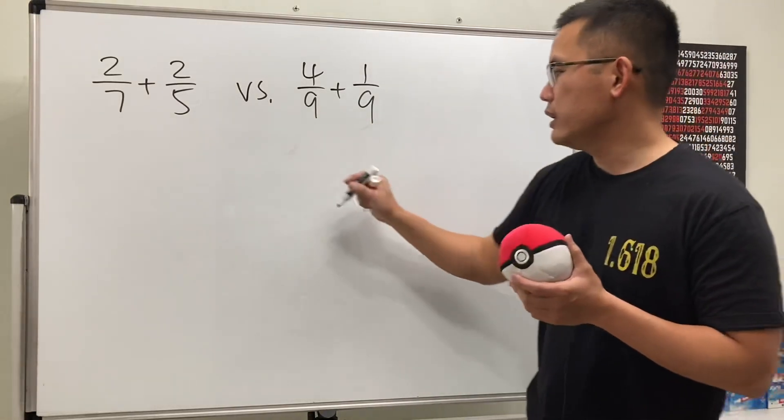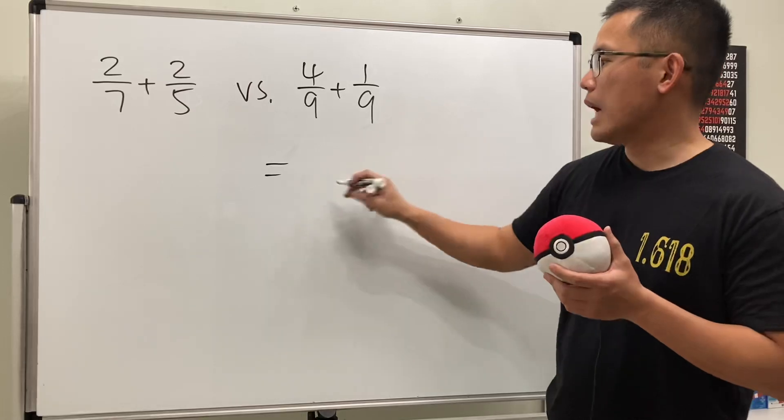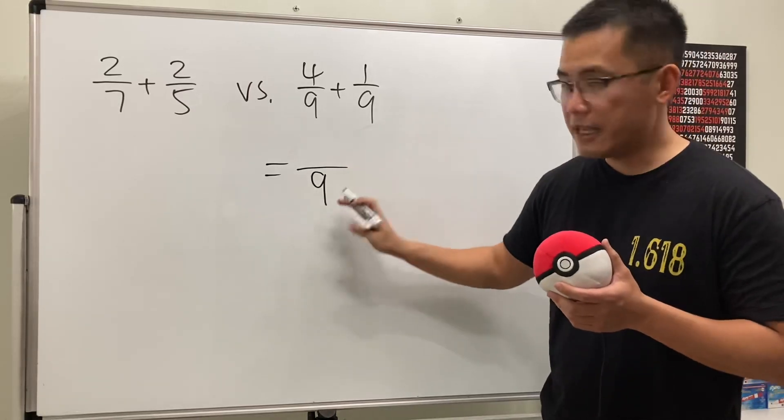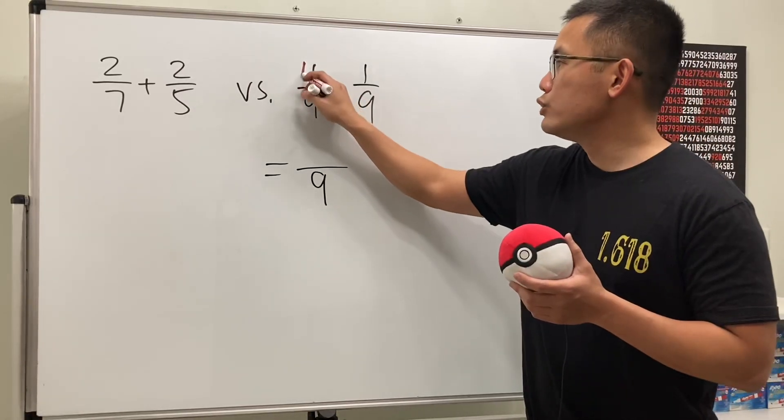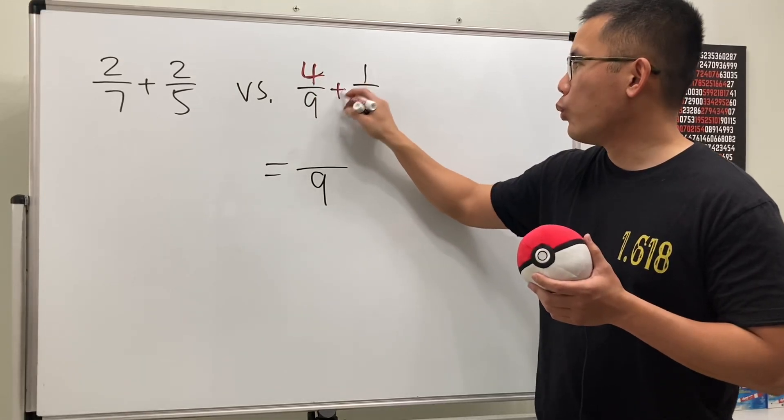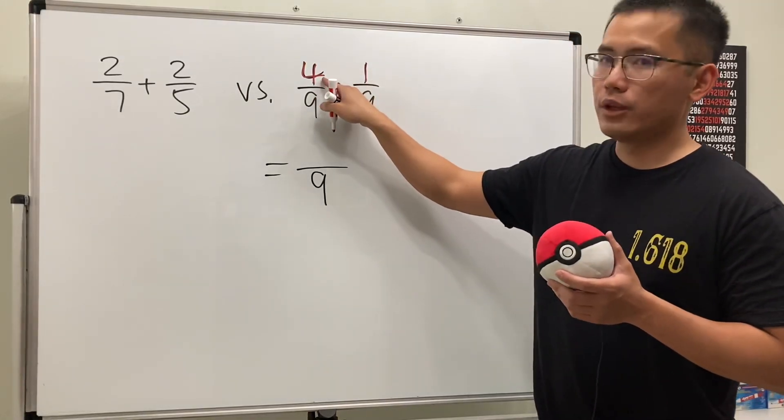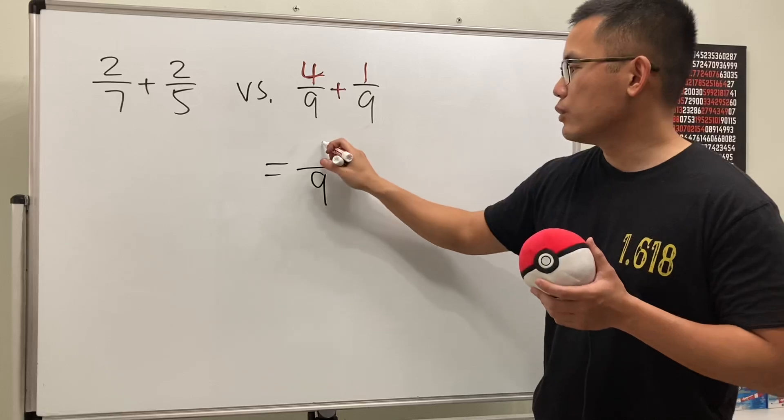The way to do it is you just keep the denominator as it is, which is still 9, and then you look at the top which we have 4 here and then we are adding 1, so we can just go ahead and do 4 plus 1 and the answer right here will be 5.